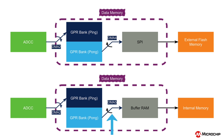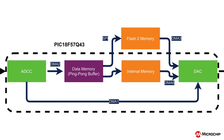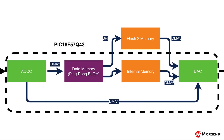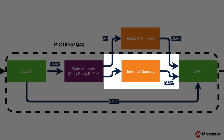DMA 5 will carry data from the ping-pong buffer to internal storage. Past the ping-pong buffer, the data can take two routes. On boot-up, the microcontroller will check for the presence of a Flash2Click. If present, it will send the data along the external storage path; otherwise, the data will be sent down the internal storage path.